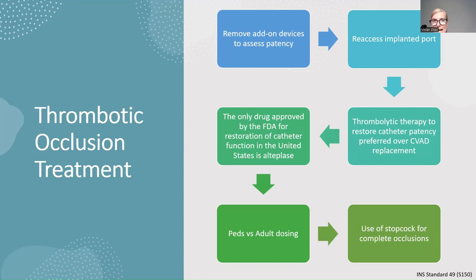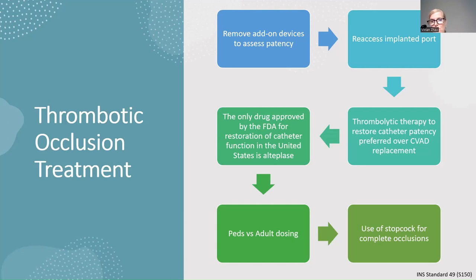For thrombotic occlusions: remove any add-on devices to assess for patency, as sometimes just changing the needleless connector resolves the issue. Re-access a port if unable to flush. Thrombolytic therapy to restore patency is preferred over CVAD replacement, which is associated with higher hospital costs and higher complications. Alteplase is the only approved drug for restoration of catheter function. Dosing is weight-based: patients above 30 kg get 2 mL; below 30 kg, it's 110% of their fill volume.